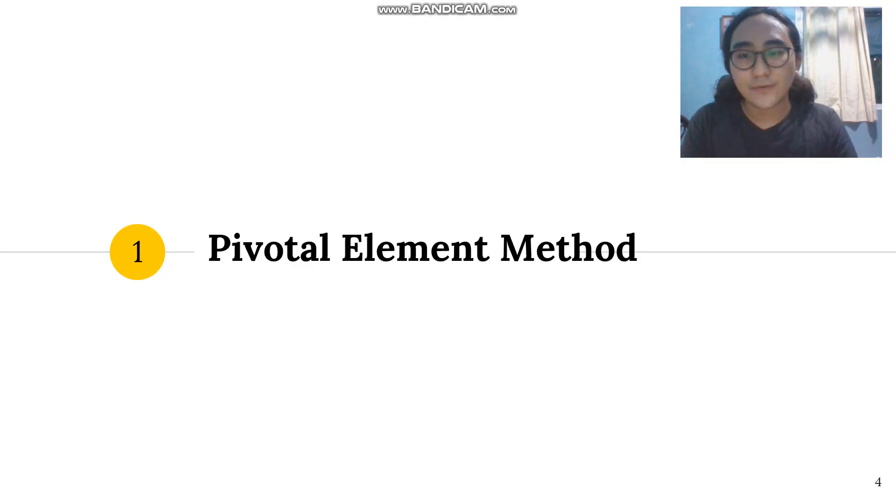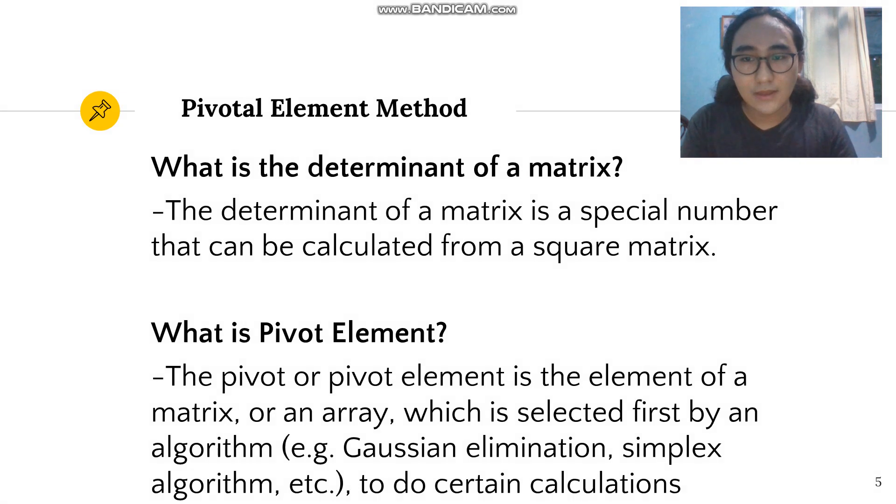So without further ado, here we have the pivotal element method. What is the determinant of a matrix? The determinant of a matrix is a special number that can be calculated from a square matrix. Why is it called pivot then? What is the pivot element? The pivot element is the element of a matrix which is selected first by an algorithm to do certain calculations.